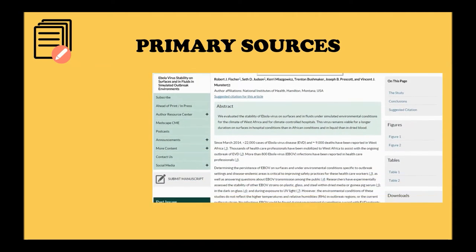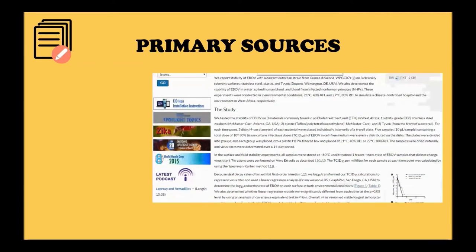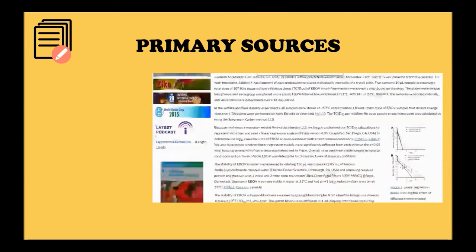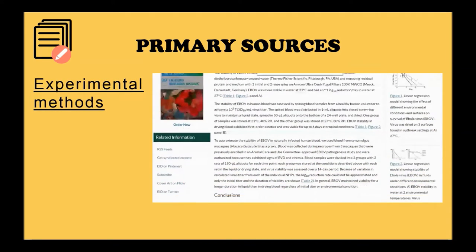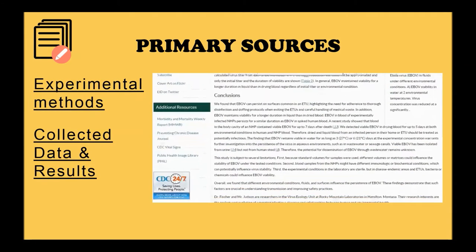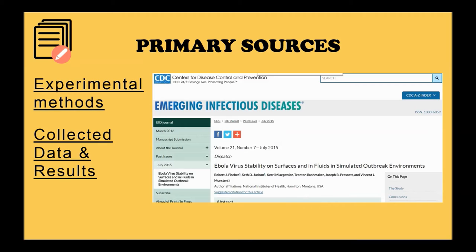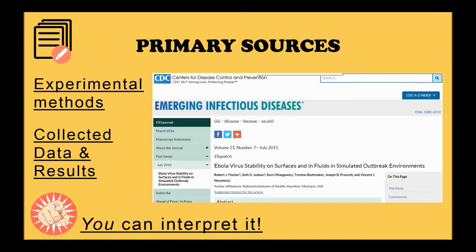In the Health Sciences, primary sources of note are scholarly articles that report the methods and the observations of an original research study. Here's an example of a peer-reviewed research article from July of 2015. It details an experiment that was conducted to test the persistence of the Ebola virus in bodily fluids. Original research like this is so valuable in the Health Sciences because it allows you the opportunity to interpret the results for your study.